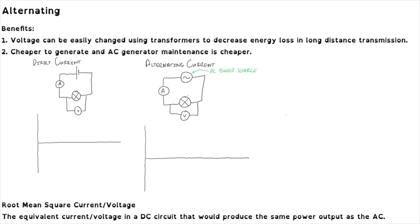In a direct current circuit, the current and voltage are always constant. In the circuit shown here, we can easily draw a graph of current versus time because the current is in a constant direction with a constant value. The voltage measured across the light bulb would also be a constant value, and so we can easily calculate the power dissipated by the light bulb using the formula: power equals current times voltage. Power would also be a constant value in this circuit.